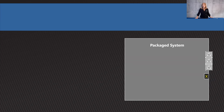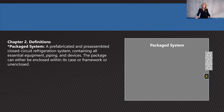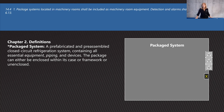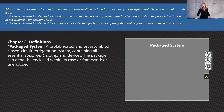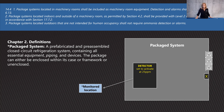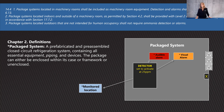Package systems are becoming more and more common. These are prefabricated, preassembled, closed-circuit refrigeration systems containing all the essential equipment, piping, and devices — enclosed within a case or framework, or unenclosed. They're often delivered on a trailer and placed on a rooftop. If all the equipment is exposed and outdoors, you don't need detection. But if there's any chance people will go inside the enclosure, you have to have a detector and audio/visual alarms.